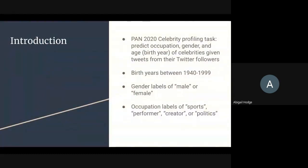So just a general overview of what this task entails. This task is a celebrity profiling task based off of Twitter. It is to predict the occupation, gender, and age — specifically the birth year — of celebrities on Twitter, given tweets not from the celebrities themselves but from their Twitter followers. The birth years are between 1940 and 1999. The gender labels can be either male or female, and the occupation labels include sports, performer, creator, and politics.